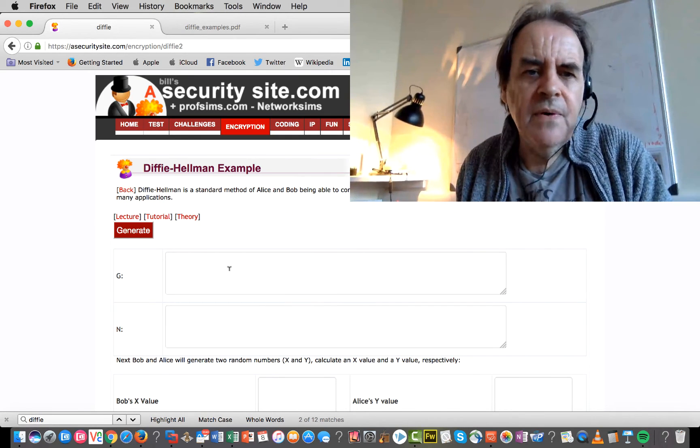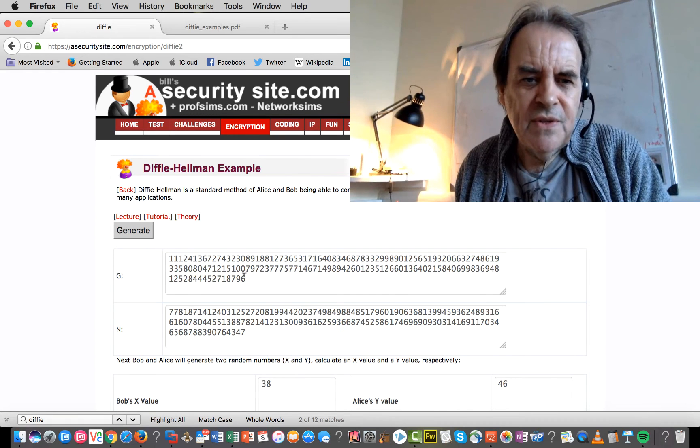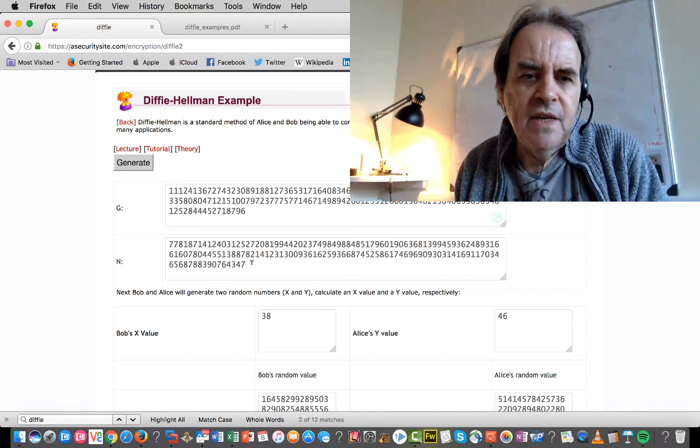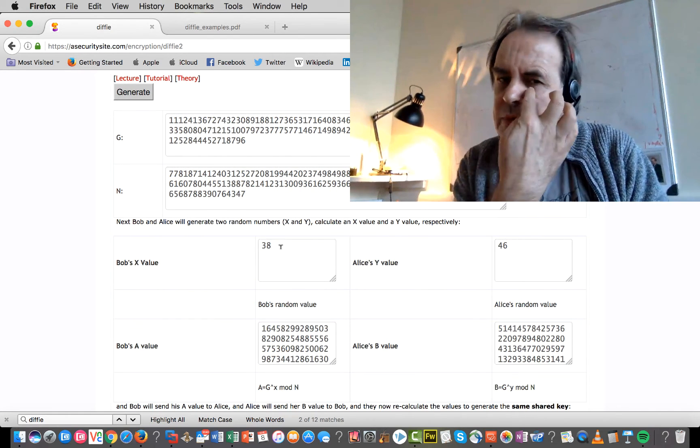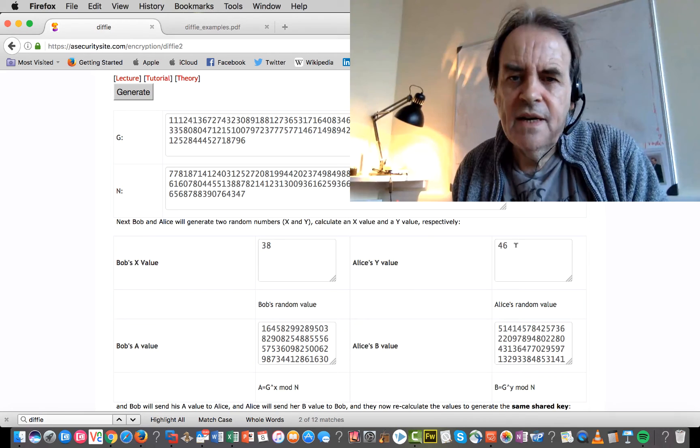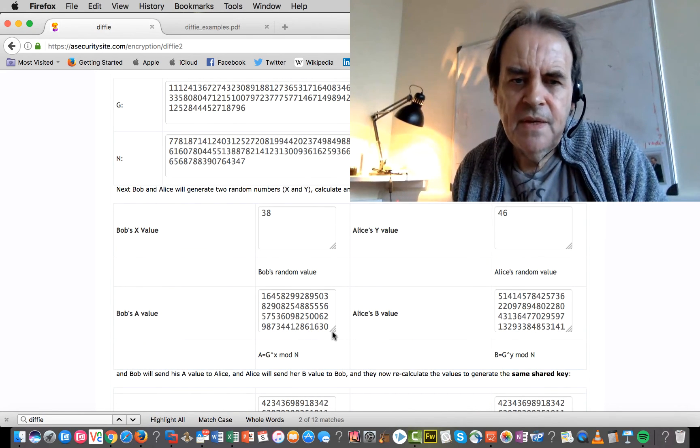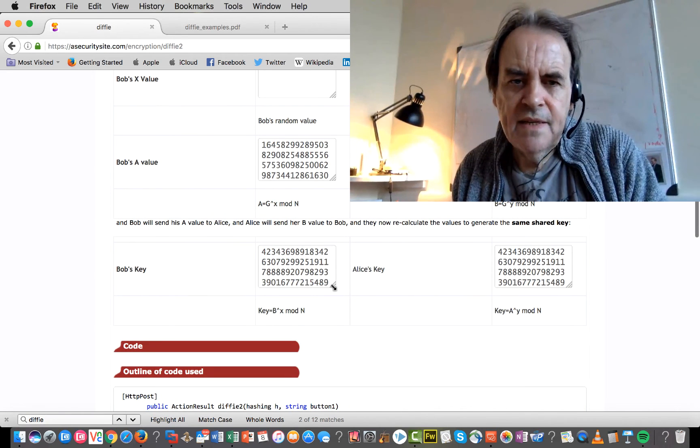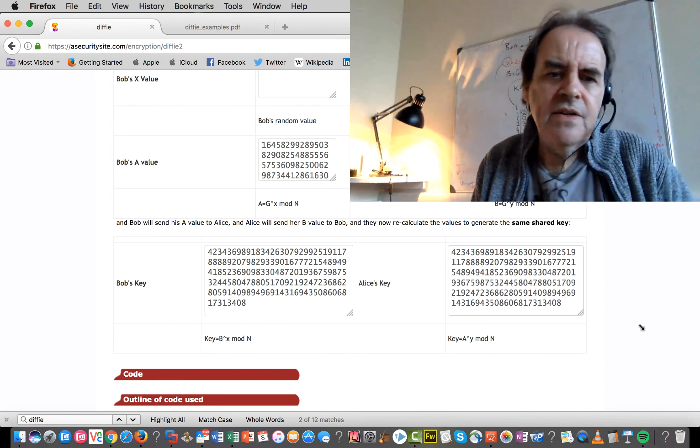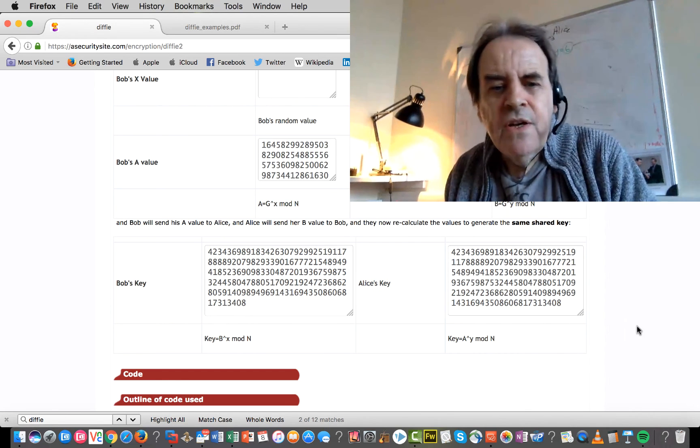In the real-life example, our G value looks a bit more like that—that's a hexadecimal value for G and for N. So we can see here Bob's random value is 38, Alice's is 46. We get our calculation, exchange the values, and in the end, there is Bob's key and then there is Alice's key.